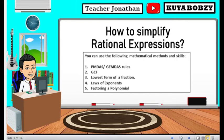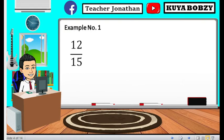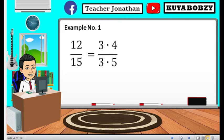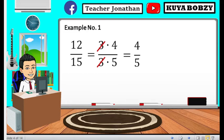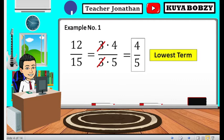Without further ado, let's start with the first example. We have 12 over 15. This is just a simple and the most basic simplifying rational expression. We could list all their factors — the factors of 12 are 3 times 4, and for 15 we have 3 times 5. We can cancel out 3 for both numerator and denominator, and that will give you 4 over 5 as the lowest term. This is the answer for example number 1.